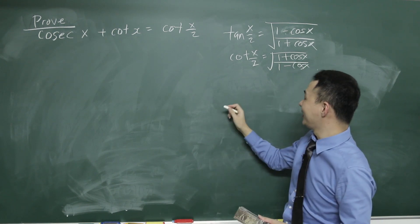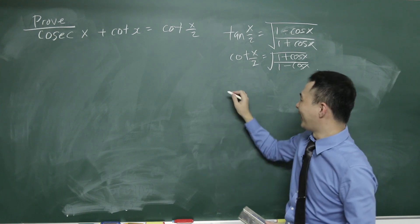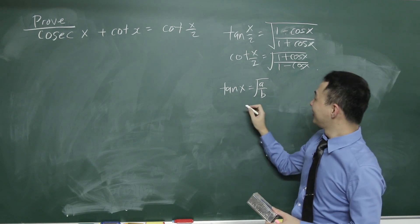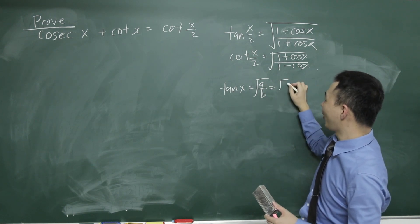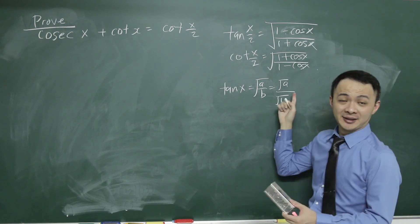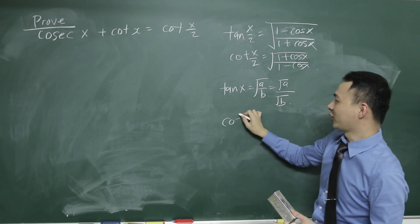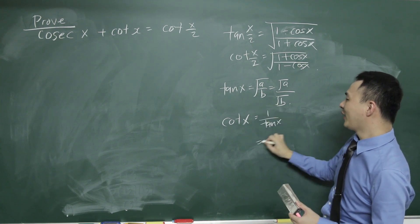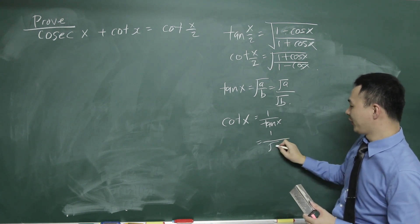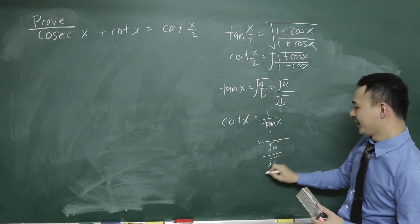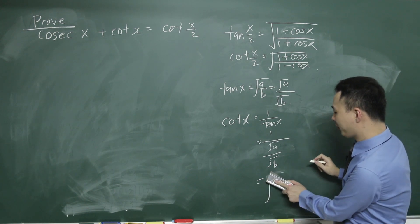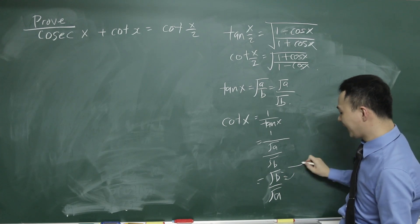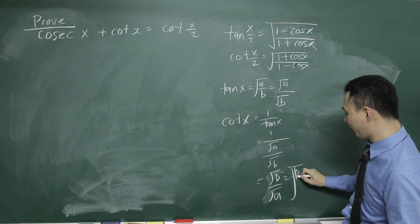Let me do a simple example. Let's say tangent x equals square root of a over b. This can also be written as square root a over square root b. So cotangent x, which equals 1 over tangent x, is 1 over square root a over square root b, giving you square root b over square root a.